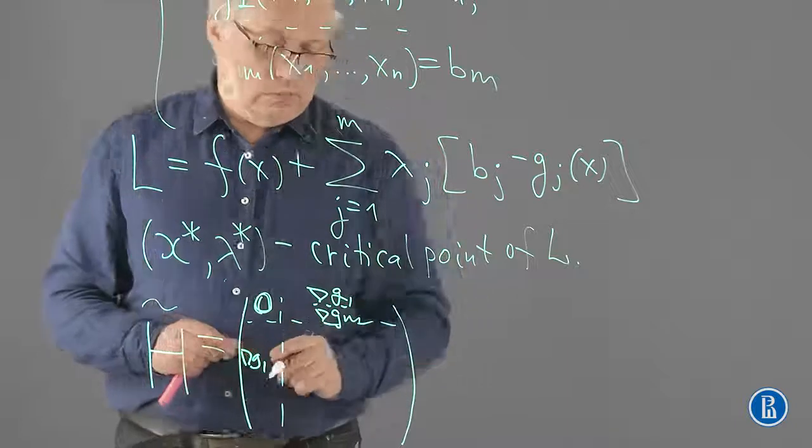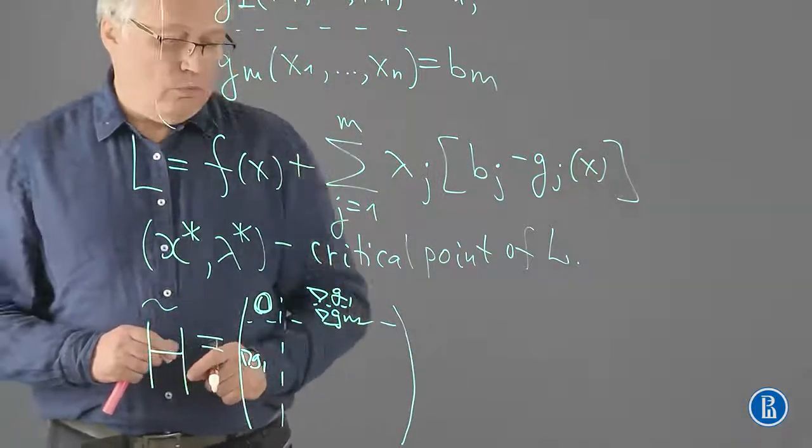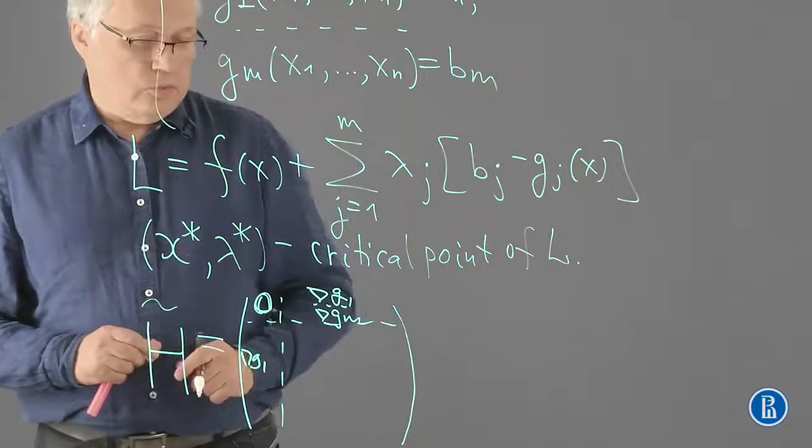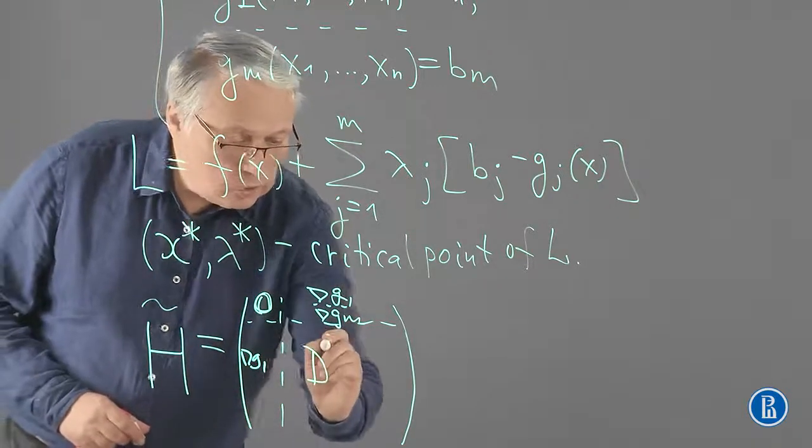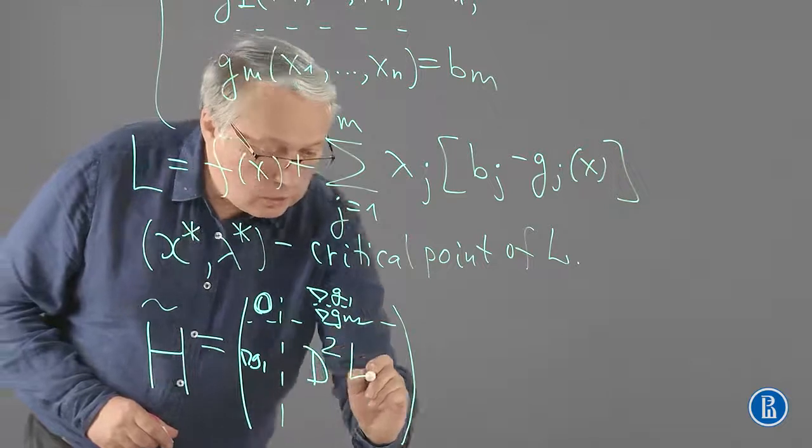The main block, which is a square matrix of the size n times n, is entirely made of second-order derivatives of the Lagrangian function.